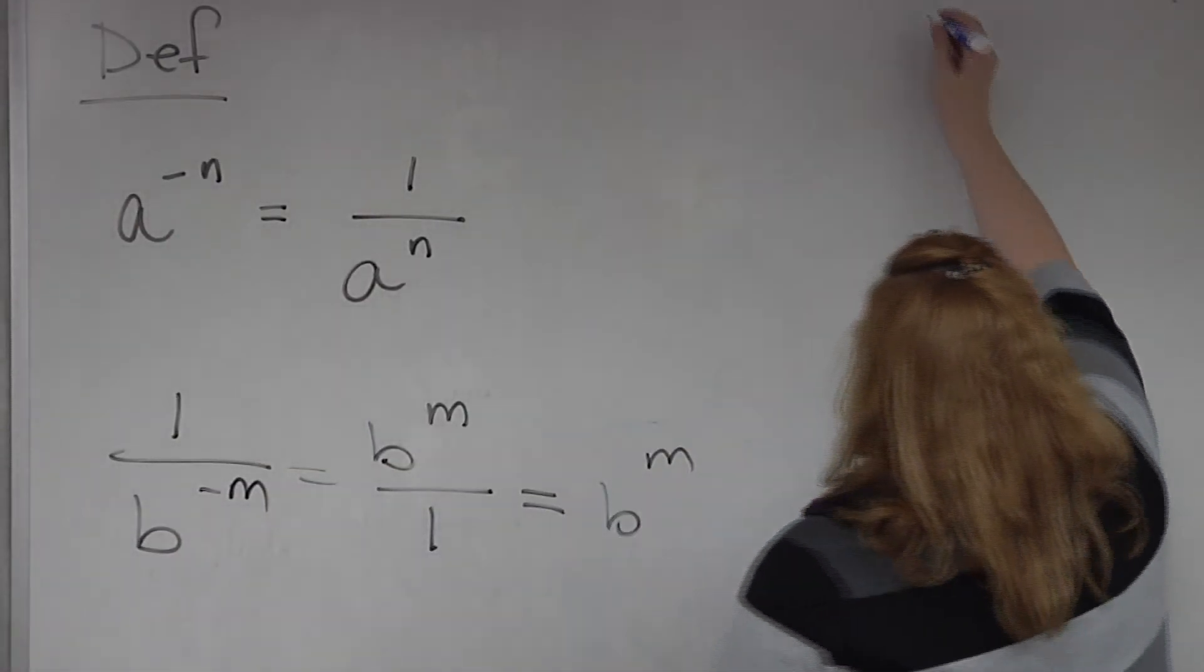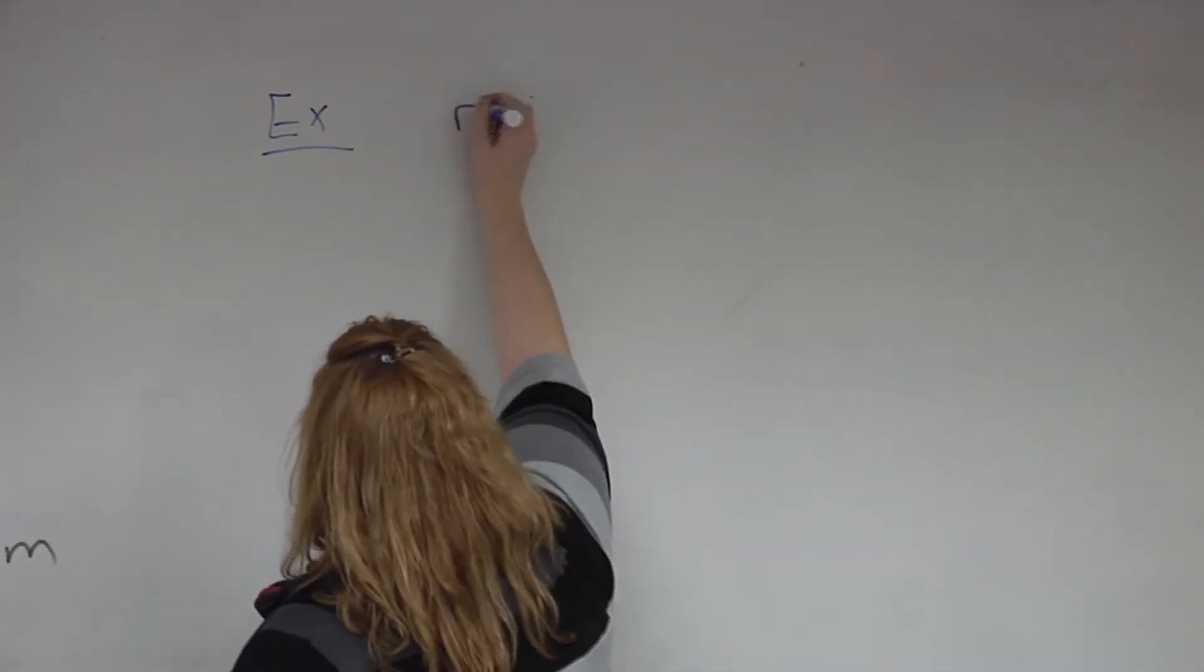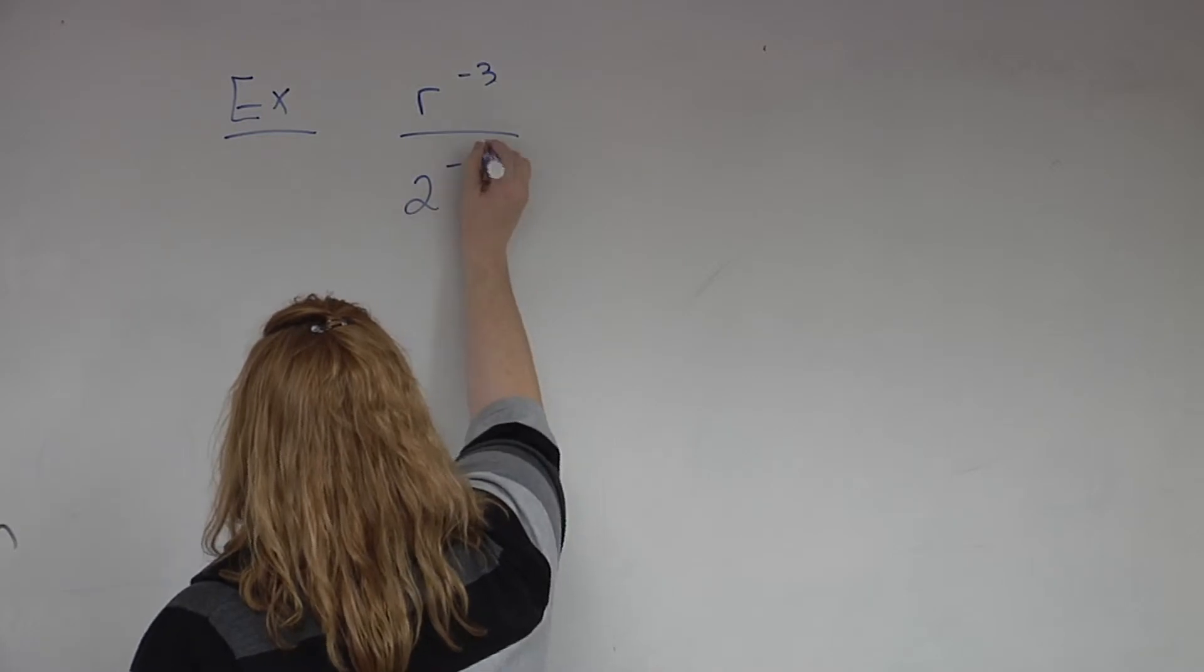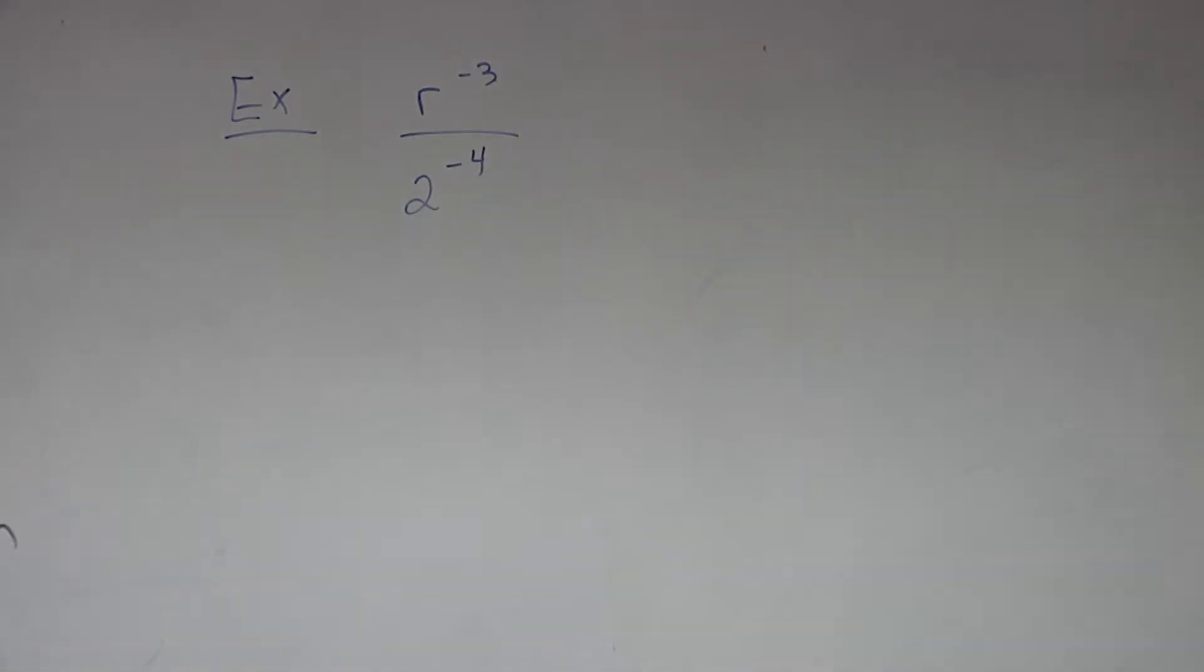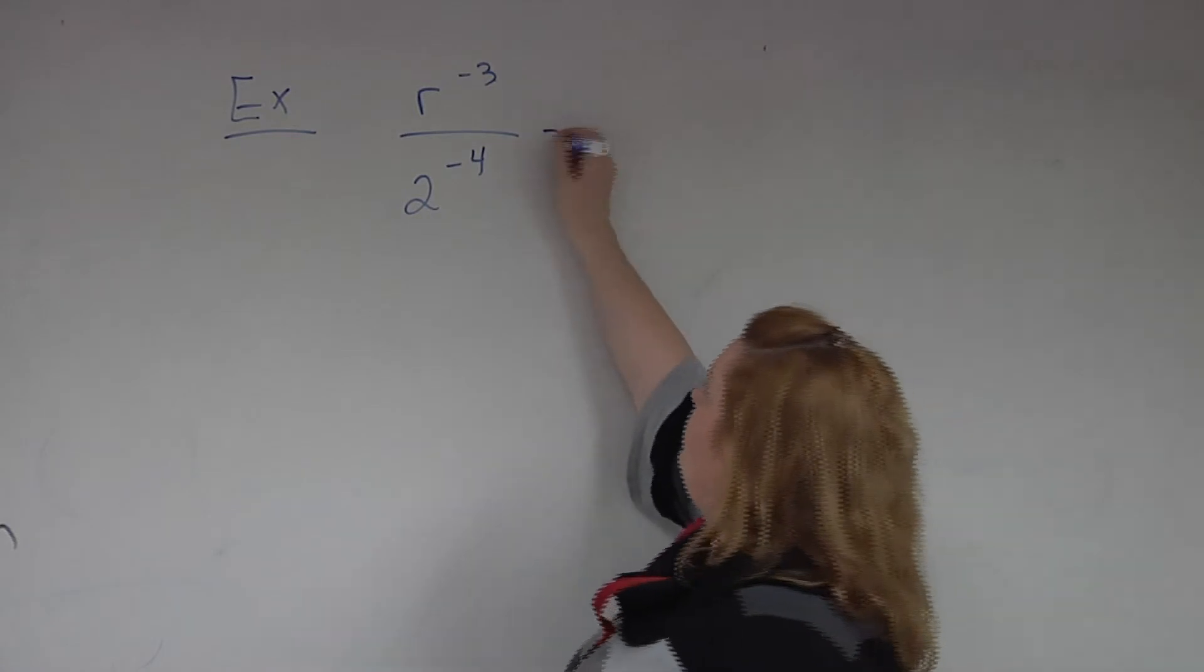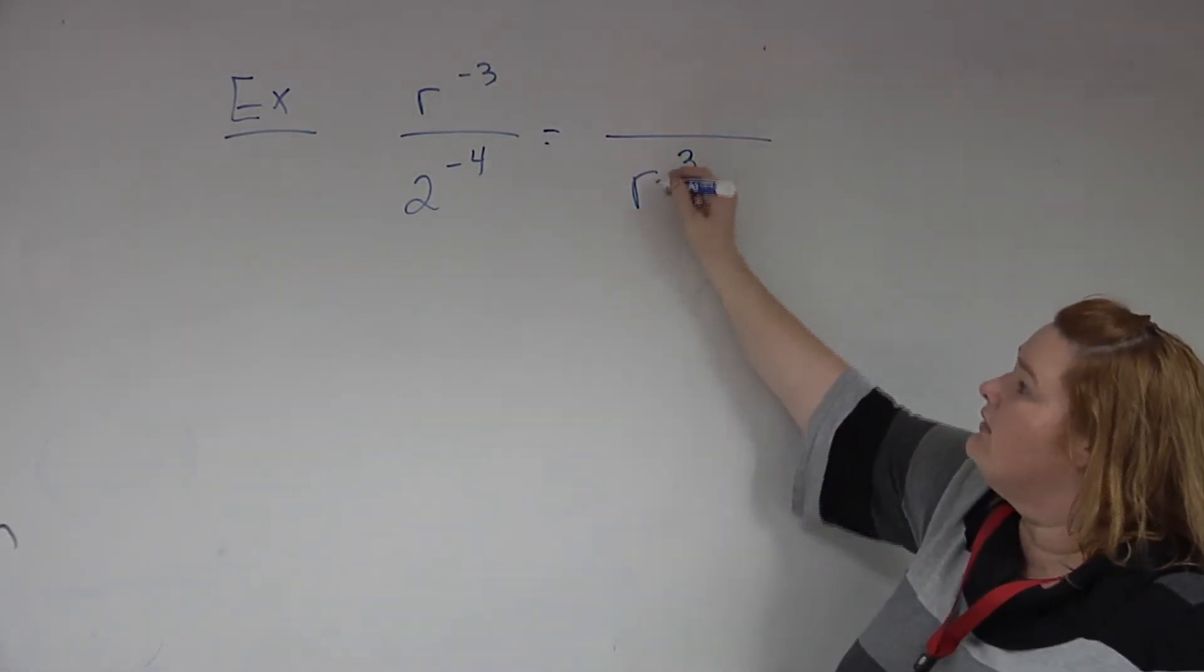So in the next set of problems, we actually have both items. So let's try an example. r to the negative 3 over 2 to the negative 4. You can do them one at a time. You can do them all together. Your choice. So that r to the negative 3 has a negative exponent in the numerator. So if I'm going to change that negative exponent to a positive, where's the r going to end up? On the bottom. On the bottom. And what is it going to look like on the bottom? r to the 3rd power.